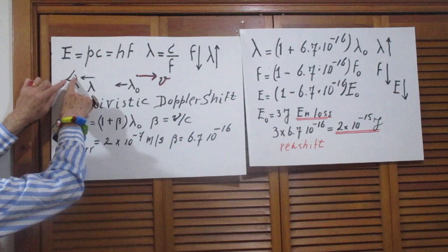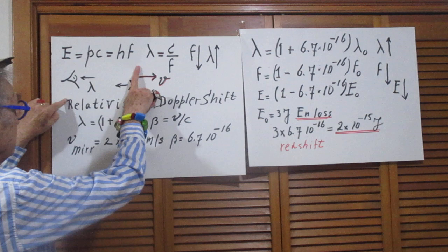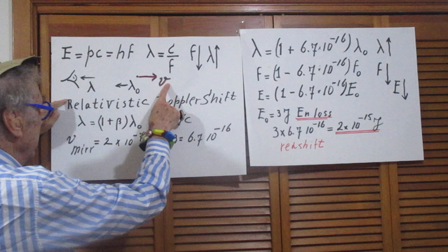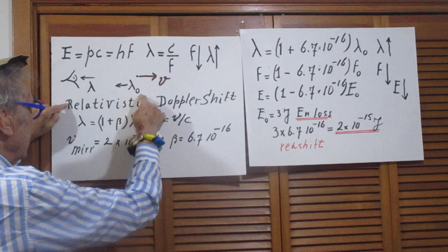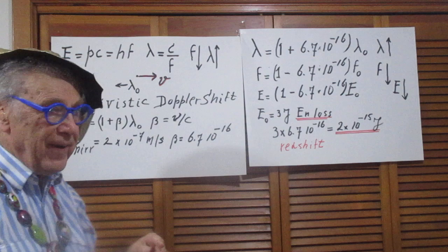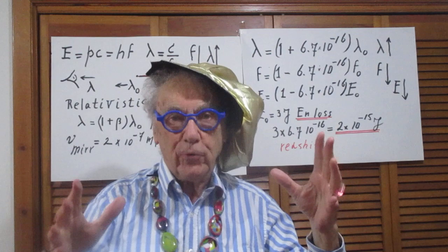Now you are here and here is the mirror, and the mirror moves away from you with speed V, which is 2 times 10 to the minus 7 meters per second. The light that is reflected off the mirror, let us say it has a wavelength lambda zero. And the fact that it has a whole spectrum of wavelengths is irrelevant because what comes will hold for all wavelengths.